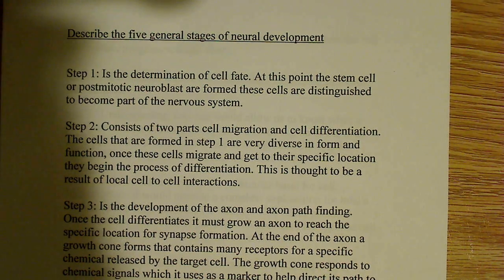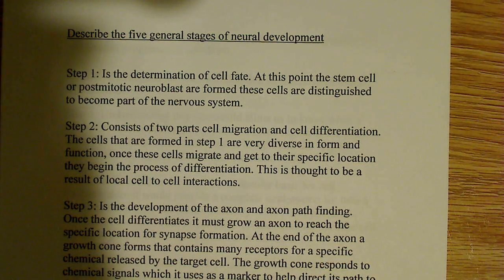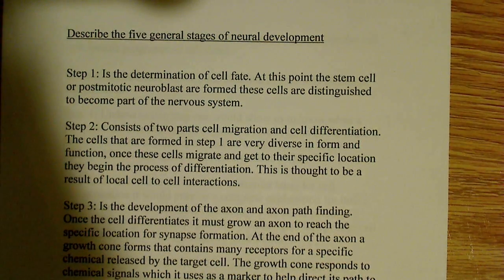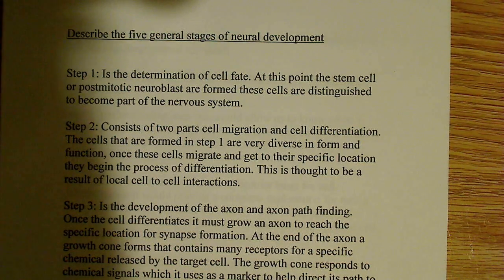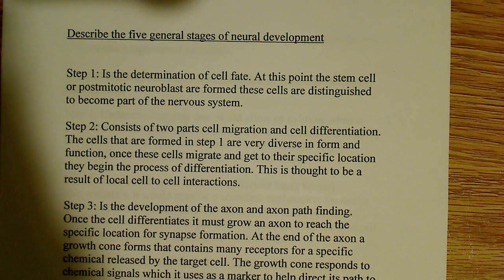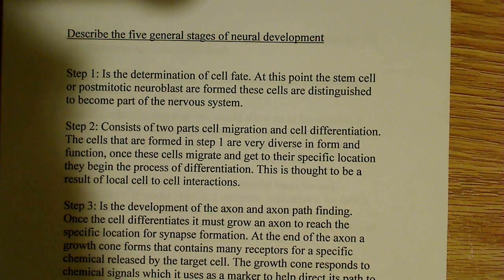Starting with step one: it's the determination of cell fate. At this point, the stem cells, or post-mitotic neuroblasts, are formed, and these cells are distinguished to become part of the nervous system. Essentially, they're marked to become part of the nervous system — these cells are specified in some way to be involved in the formation of the nervous system.